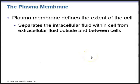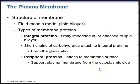The plasma membrane defines the extent of the cell. It separates the intracellular fluid within the cell from the extracellular fluid outside and between cells. The structure of the plasma membrane is based on a fluid mosaic model, meaning it has a lipid bilayer. Within the lipid bilayer we can see types of membrane proteins. We have integral proteins, which are firmly embedded in the plasma membrane or attached to the lipid bilayer.